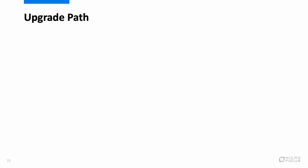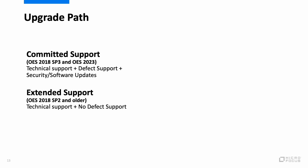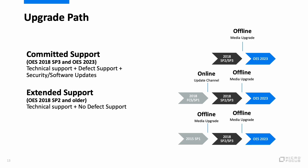When you are current on maintenance, you receive two types of support depending on the product version. We provide committed support to the latest and N-1 version, which includes technical support, defect fixes and security software updates. Any version older than N-1 receives extended support and includes technical support only to solve any deployment configuration issues. In most cases, our support would ask you to upgrade your deployment to receive defect fixes. You can upgrade your OES 2018 SP2 or SP3 installations directly to the latest OES 2023 using the offline media upgrade method. If you are on an older version, you will need an additional step to get to OES 2018 SP3 before you can upgrade to OES 2023.